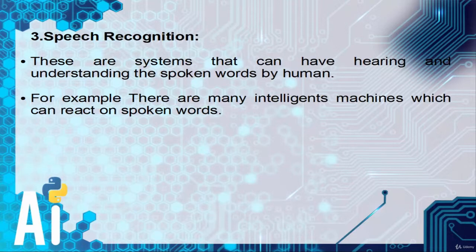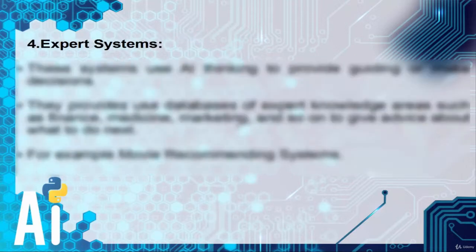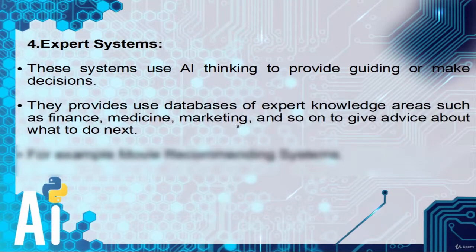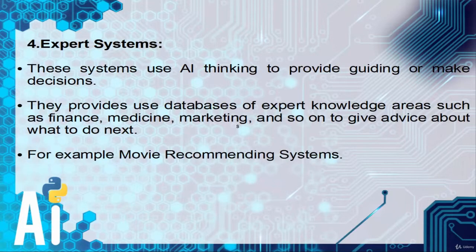Fourth, expert systems. These systems use AI thinking to provide guidance or make decisions. They use databases of expert knowledge in areas such as finance, medicine, marketing, and so on to give advice about what to do next. For example, movie recommending systems. You can consider Tesla's autopilot car in expert systems.